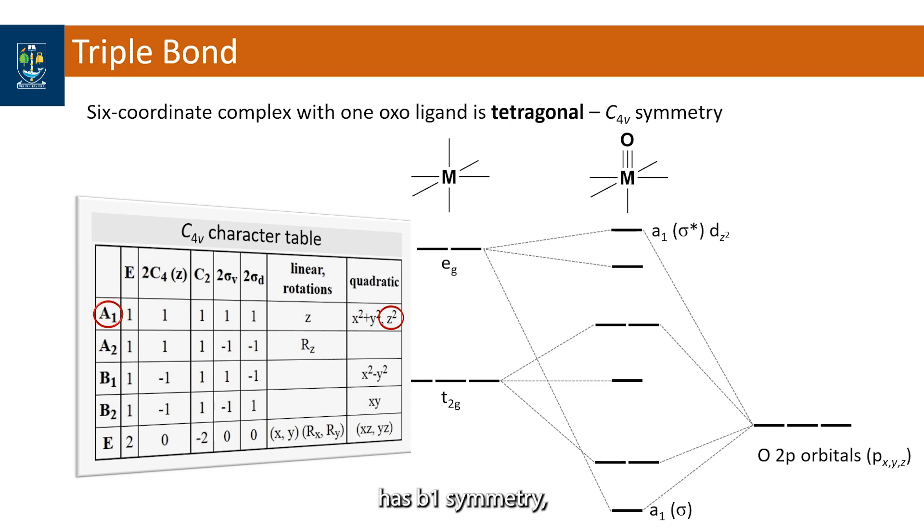The dz squared has a1 symmetry and so the sigma and sigma star molecular orbitals also have a1 symmetry. dx squared minus y squared has b1 symmetry, dxy has b2 symmetry, and the dxz and dyz orbitals are doubly degenerate with e-symmetry. Since they comprise pi molecular orbitals these also have e-symmetry.